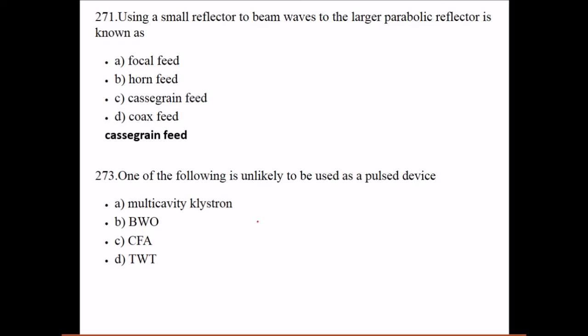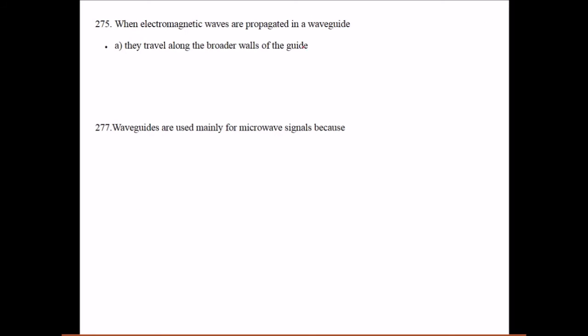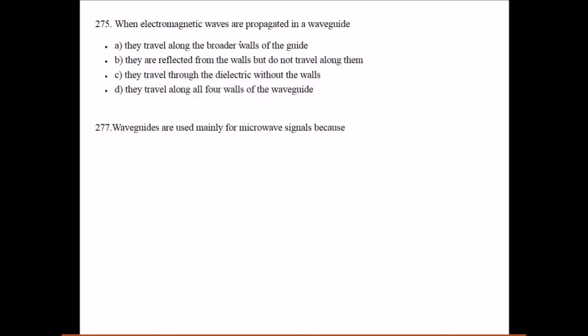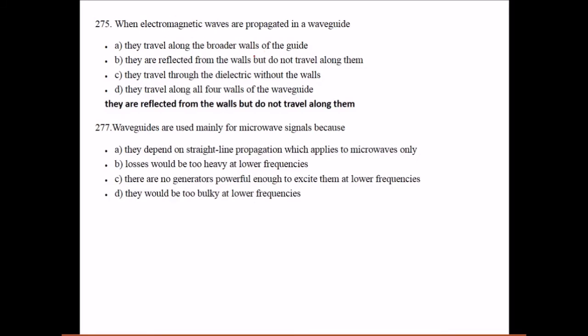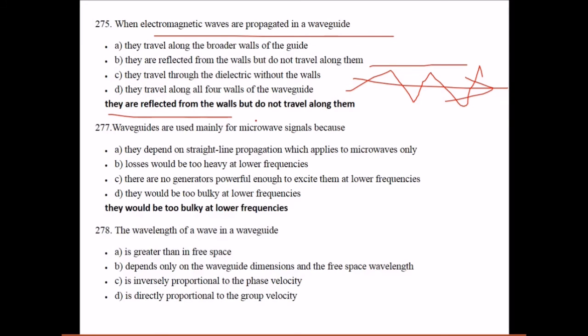One of the following is unlikely to be used as a pulse device - which one is this? BWO. When electromagnetic waves are propagated in a waveguide, they are reflected from the walls but do not travel along them.